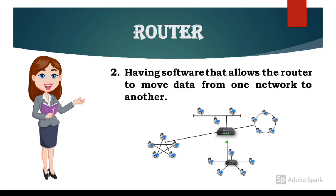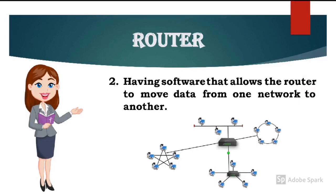The second point says: having software that allows the router to move data from one network to another. It means router mein software hota hai jo ek network se dusre network par data transfer karne mein router ki help karta hai. Router ek routing table create karta hai aur us routing table ki help se hi router ek network se dusre network par data ko move karta hai.